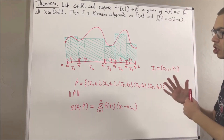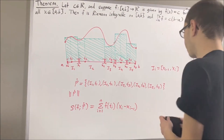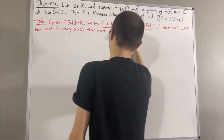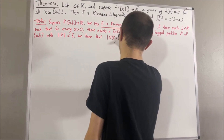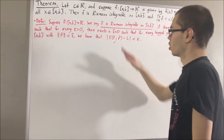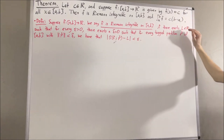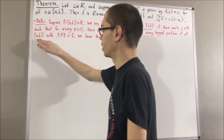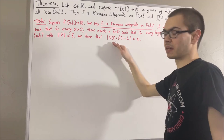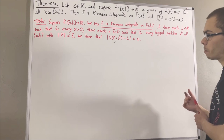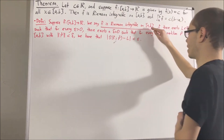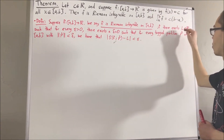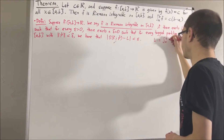Now let's talk about what it means for a function to be Riemann integrable on [a, b]. Suppose f is a function from [a, b] to ℝ. We say f is Riemann integrable on [a, b] if there exists a real number L such that for every ε > 0, there exists a δ > 0 such that for every tagged partition P of [a, b] whose norm is less than δ, we have that the absolute value of the Riemann sum minus L is less than ε. We have proven that this value L is unique, and we denote it by the integral from a to b of f.